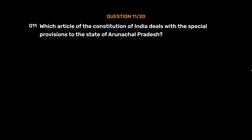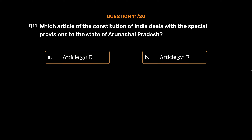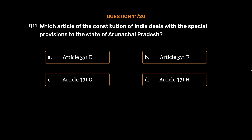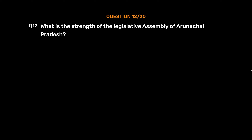Question No. 11: Which article of the Constitution of India deals with the Special Provisions to the State of Arunachal Pradesh? Option A: Article 371E. Option B: Article 371F. Option C: Article 371G. Option D: Article 371H. The correct answer is Option D: Article 371H.